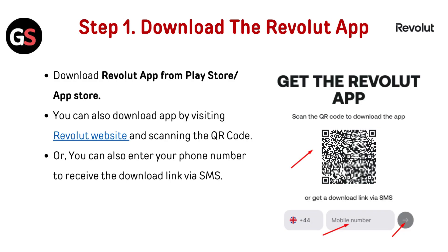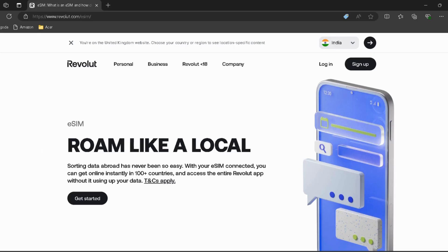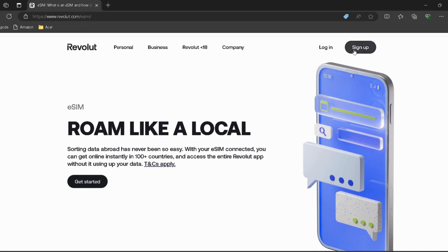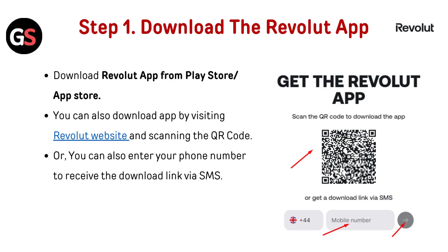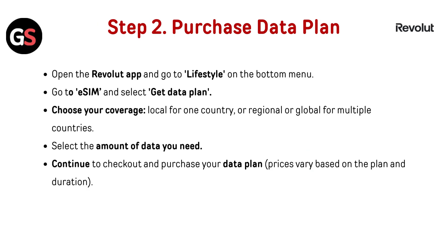Step 1: Download the Revolt app. Download the Revolt app from the Play Store or App Store. You can also download the app by visiting the Revolt website and scanning the QR code — I've provided the link in the description. You can also enter your phone number to receive the download link via SMS.